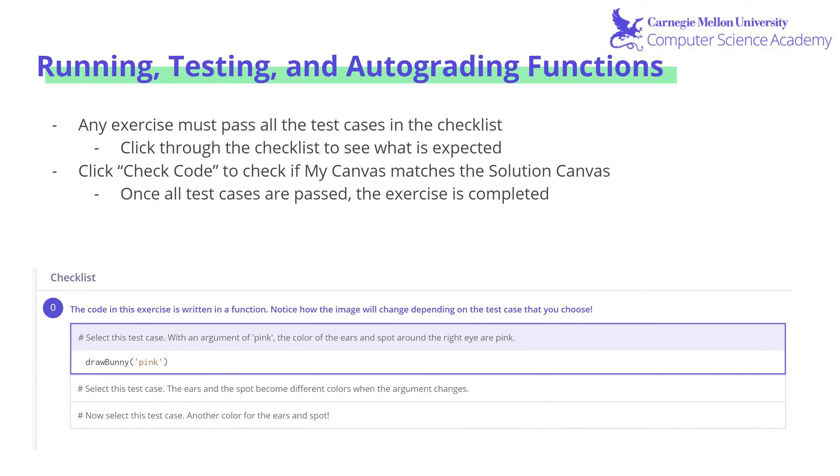Whenever you do an exercise in the CS Academy format, you'll notice at the bottom there will be a checklist. This shows all the different test cases your functions are going to have to pass. So a test case is just the input that's going to be given into the function and an expected output should be provided by your function. Usually a specific type of drawing. If you think that you've completed the entire checklist and passed all the test cases, you can always click check code for the auto grader to check it and let you know if you have passed or not.